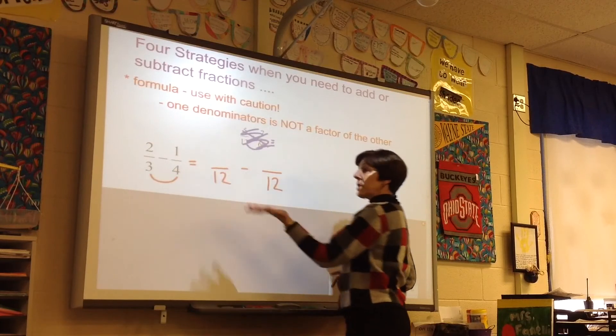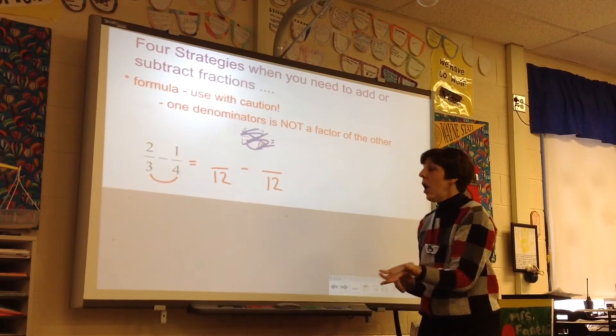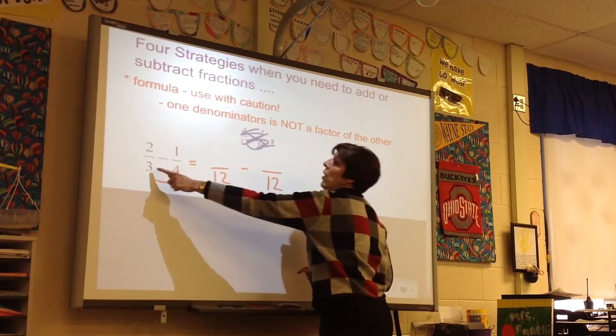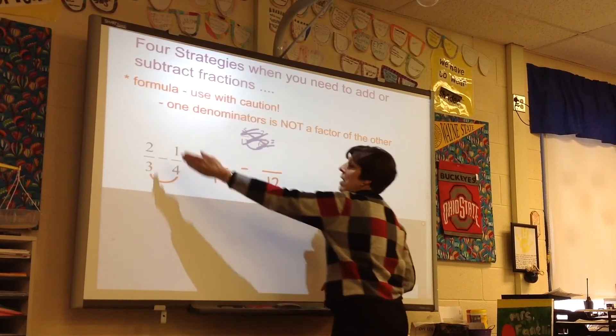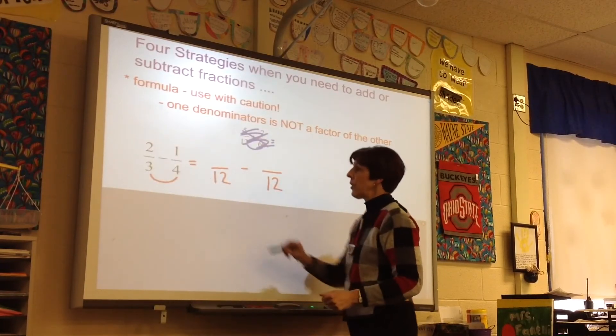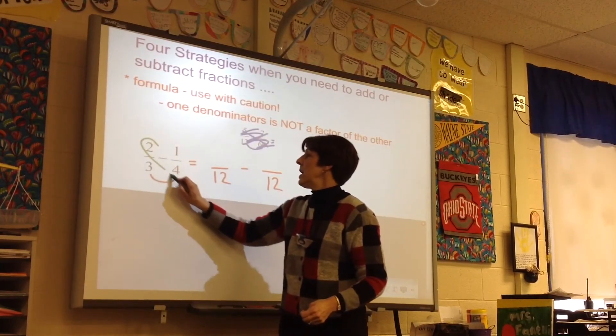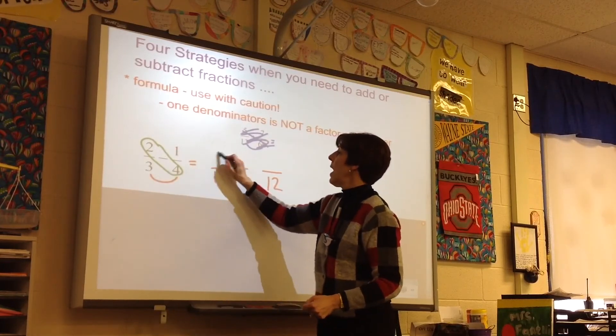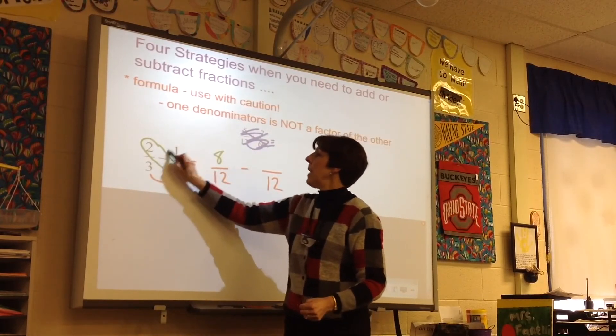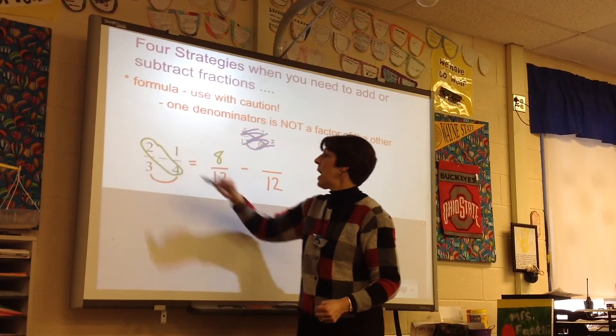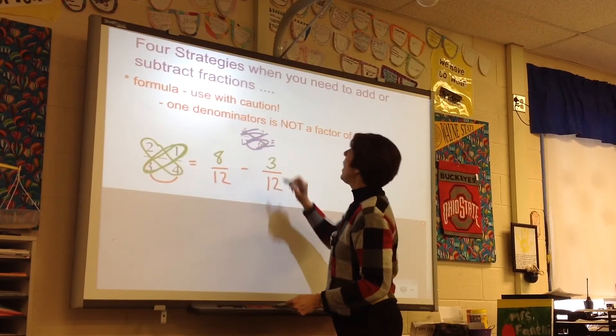For thirds and fourths, children could use the clock. Or they could see that 3 times 4 is 12. The equivalent fraction for 2 thirds is right here. 2 times 4, 8 twelfths. Minus 1 times 3 for 3 twelfths.